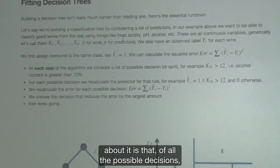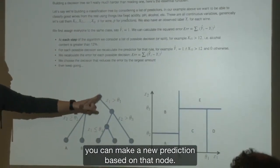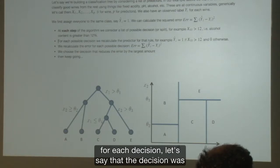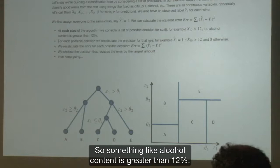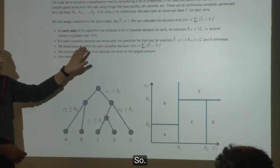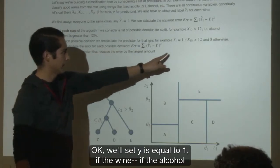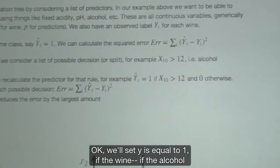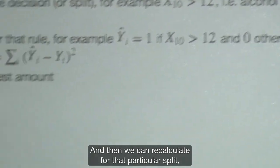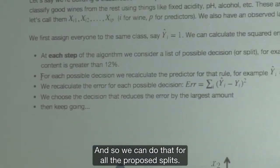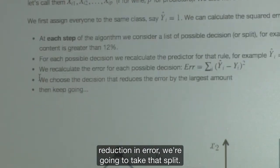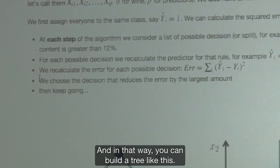And then you calculate the sum of squared errors. We've seen this before in the regression context. But basically, this is just going to be how many am I going to get wrong? And then at each step of the algorithm, you just basically write a gigantic list of possible decisions, of possible splits. And then of all the possible decisions, you can make a new prediction based on that node. And the split that provides the smallest or the most reduction in error, we're going to take that split. And in that way, you can build a tree like this.